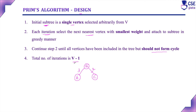The total number of iterations required to implement Prim's algorithm depends on the number of vertices in the given graph. The total iterations is n-1. If there are 5 vertices, that is 5-1, so the total iterations will be 4. With 4 iterations, Prim's algorithm will find a path to each and every vertex in the given graph.